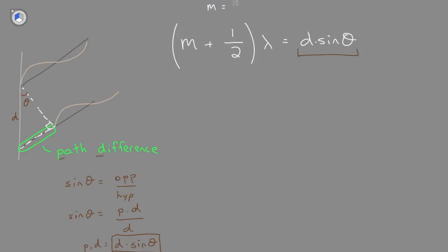m represents an integer, so 0, 1, 2, 3, etc. Lambda is the wavelength. So you should remember how destructive interference works.